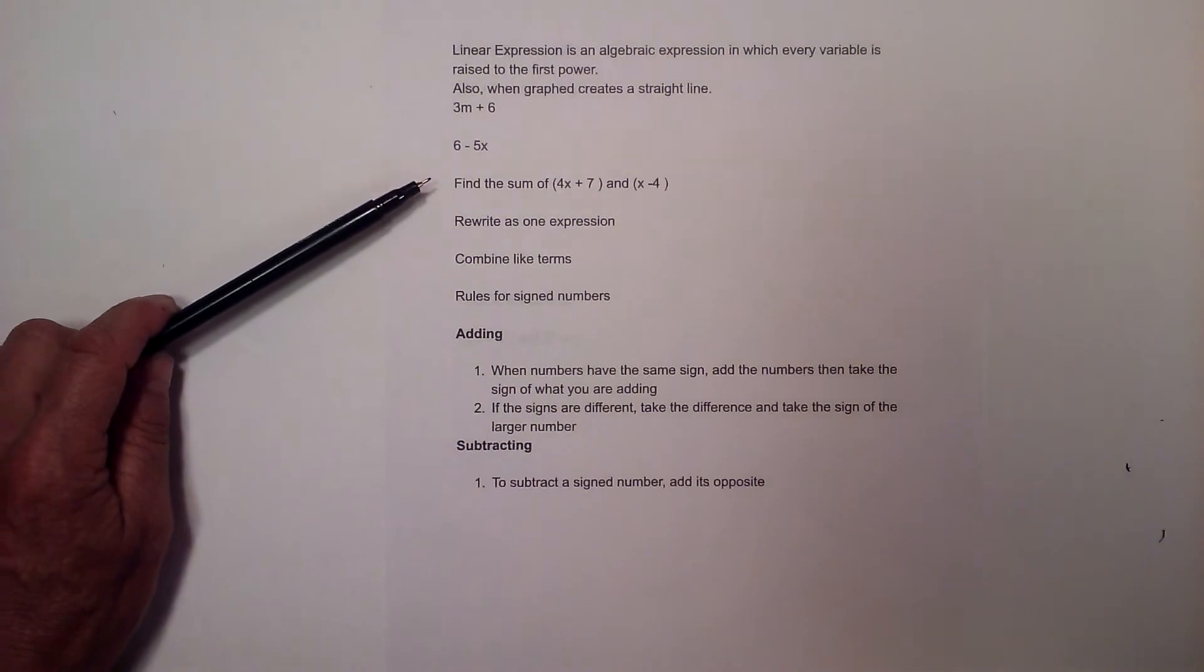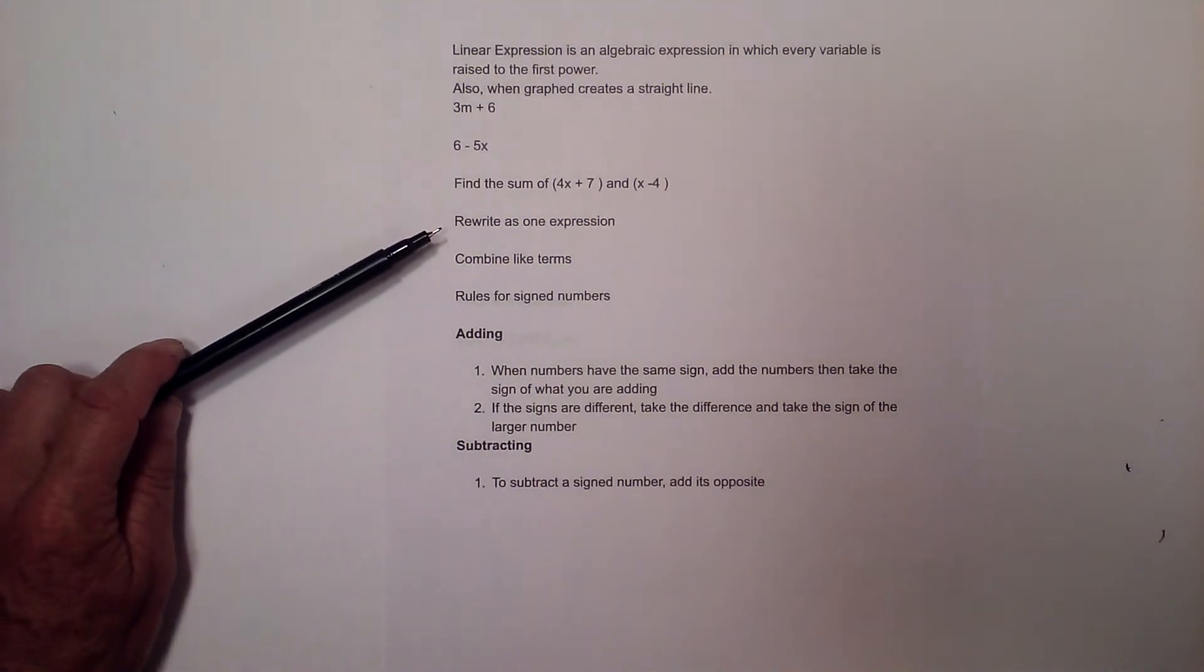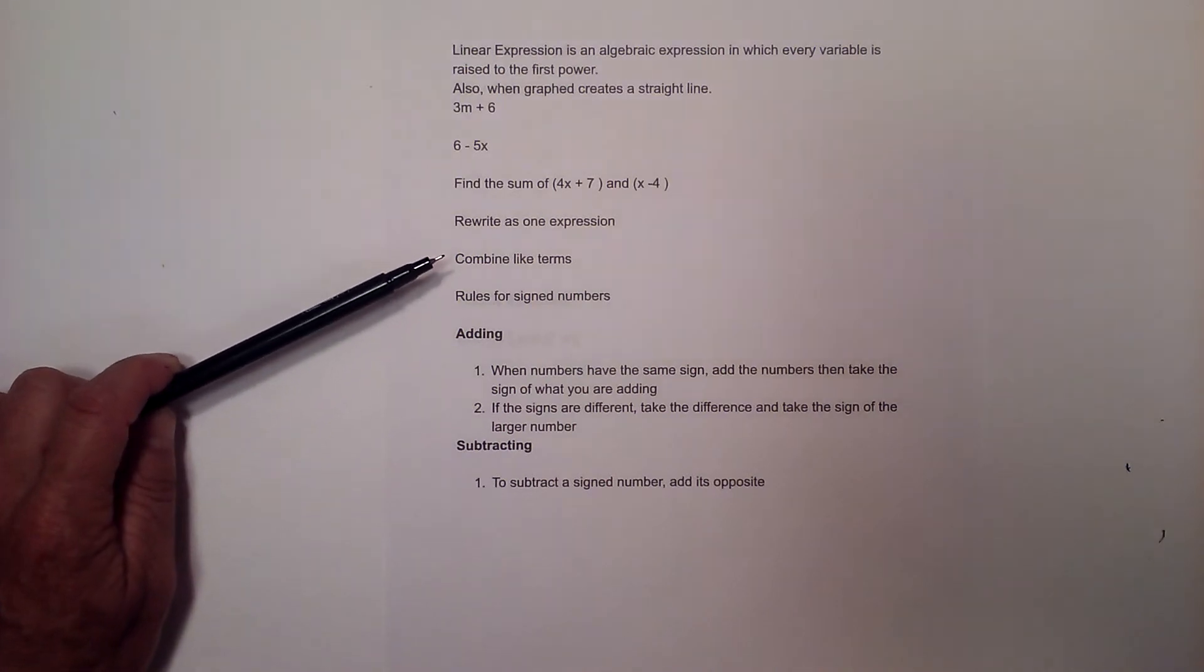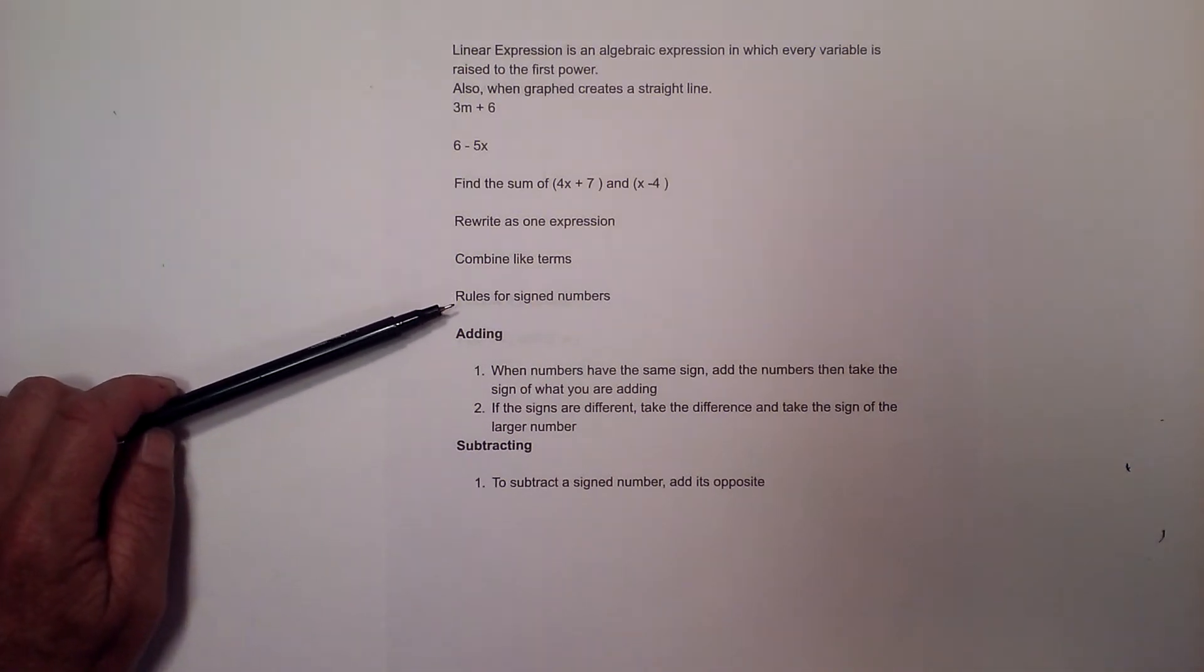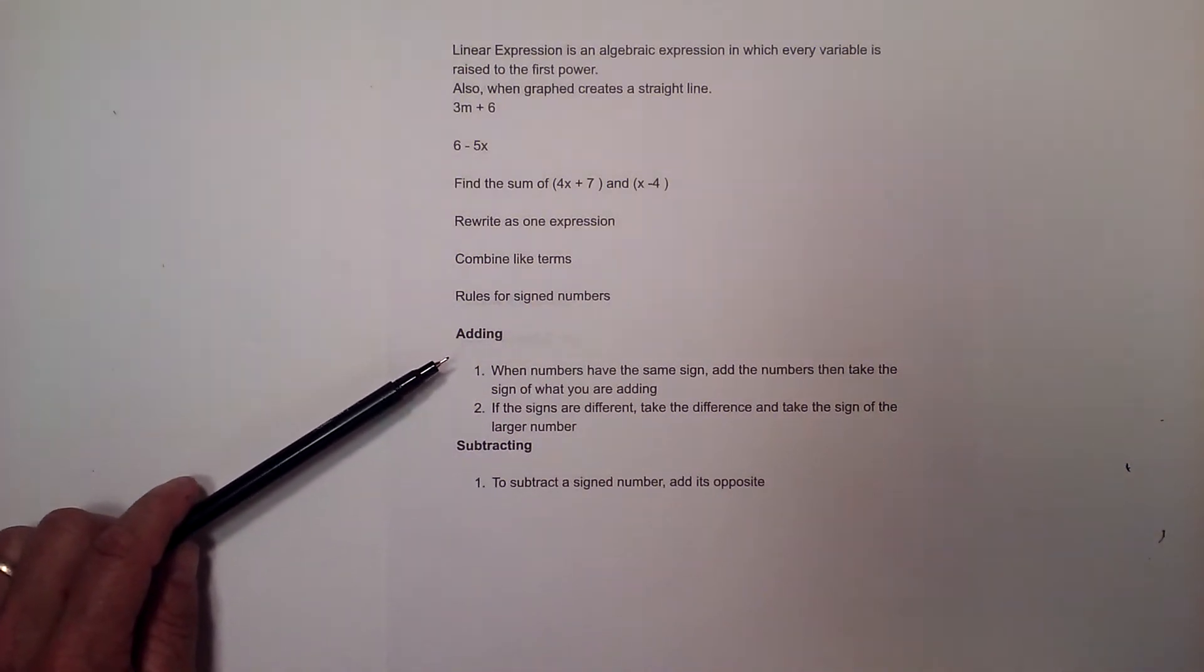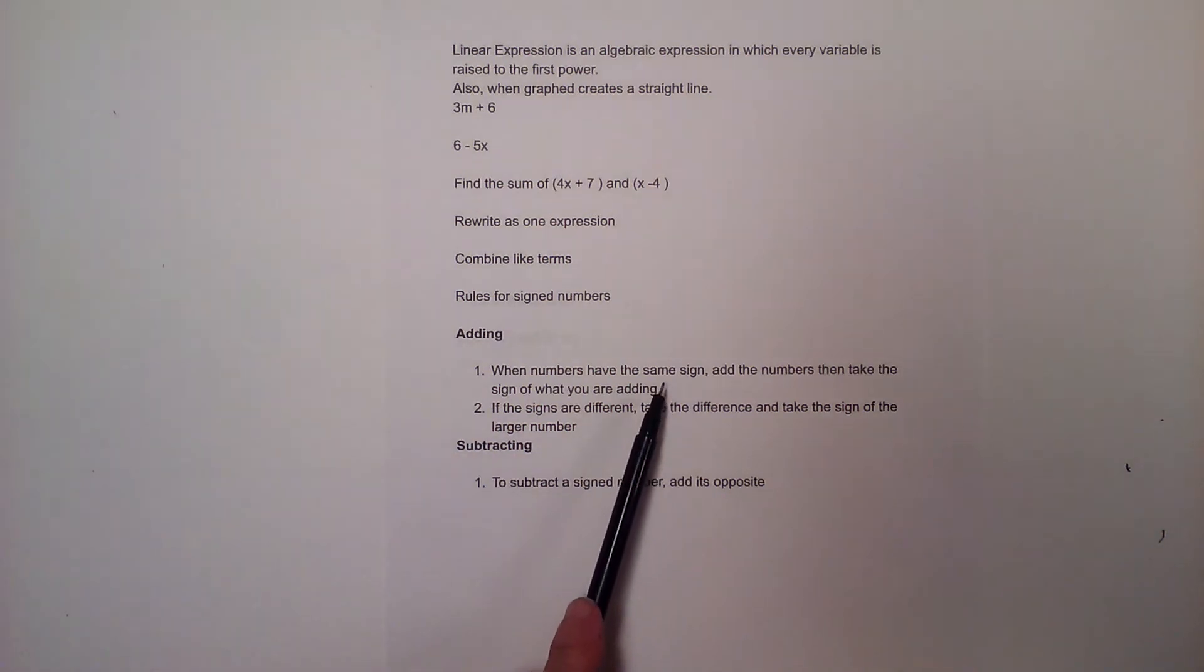So what we can do to add these two expressions is rewrite as one expression, then combine like terms and follow the rules for signed numbers. When adding, if the signs are the same add the numbers and take the sign you are adding. If they are different take the difference and take the sign of the larger number. And when subtracting, add its opposite.